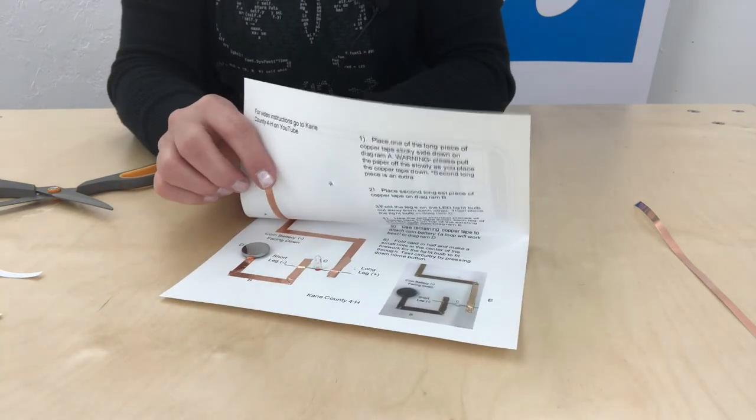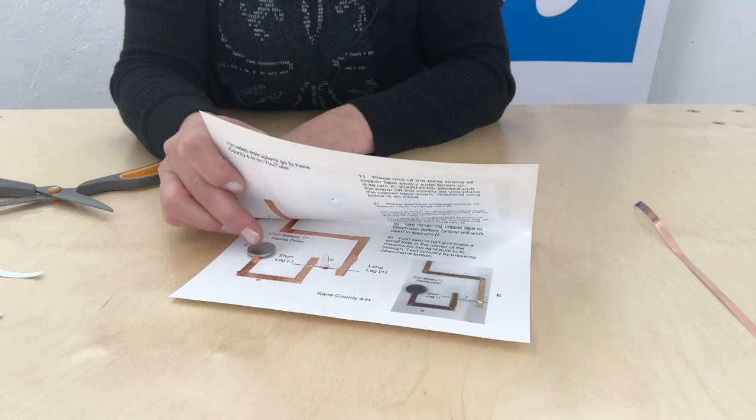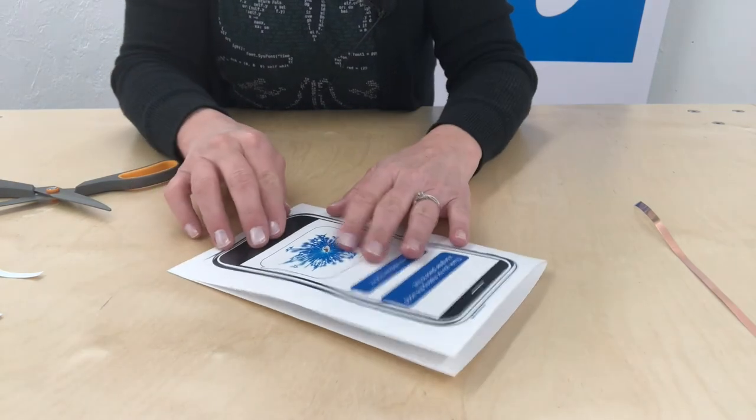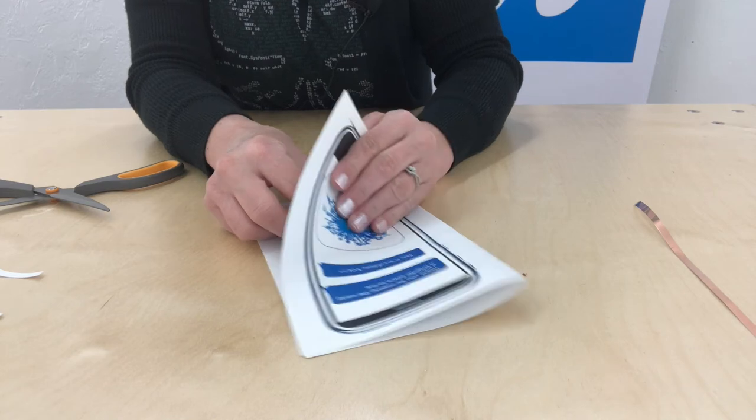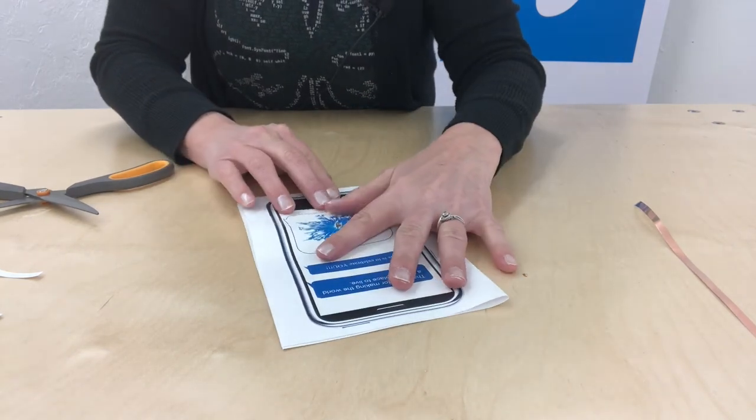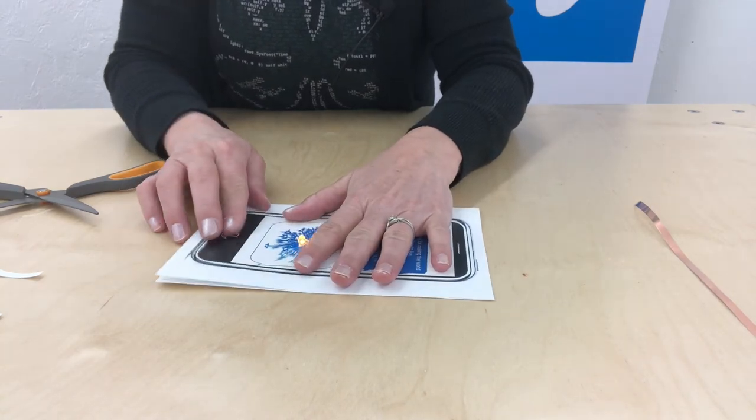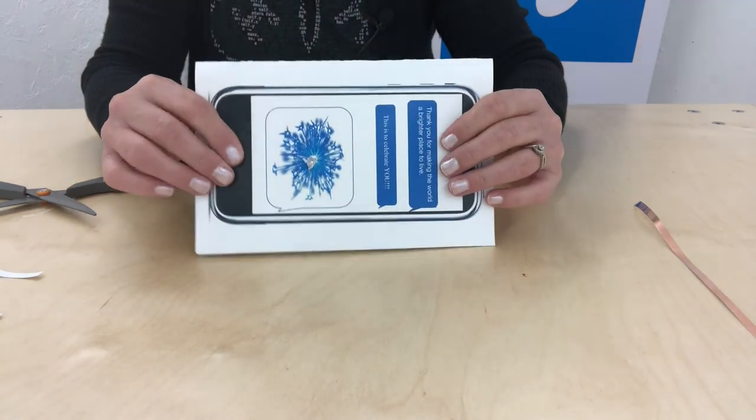And now, see the copper tape right there? When we push the home button of our phone and that copper tape connects with our battery, our circuit will work. So let's push our bulb back through there and see if our card works. There we go.